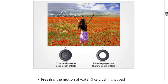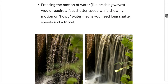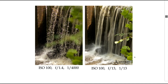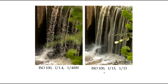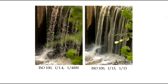When photographing landscapes, some people want to freeze the motion of water like crashing waves, which requires a fast shutter speed. Showing motion or flowy water means you need a long shutter speed and usually a tripod. Here's a side-by-side example using the same ISO 100. With f/1.4, a large aperture, and a very fast shutter speed of 1/4000th of a second, the water is frozen in time.